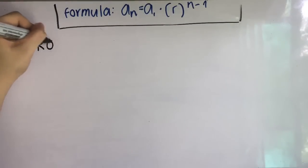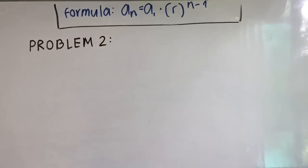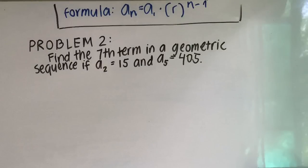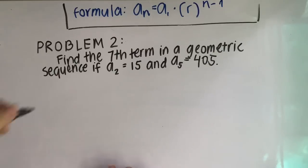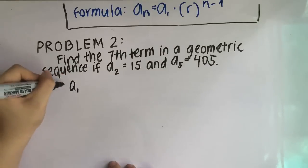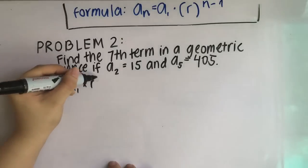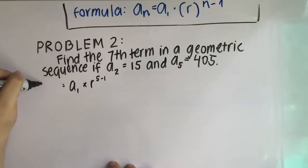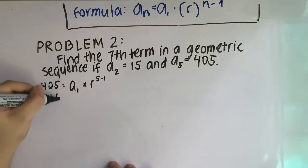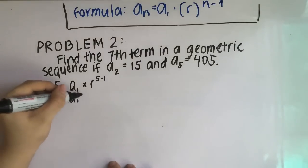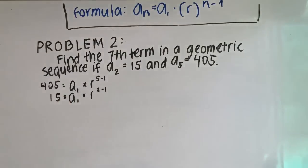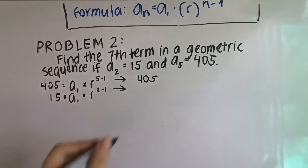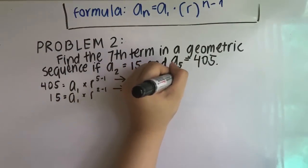On to our 2nd problem: Find the 7th term in a geometric sequence if a sub 2 is equal to 15 and a sub 5 is equal to 405. As you can see, our 2nd problem does not identify the common ratio — that is the first thing we need to solve for. We are going to line up the equations: 405 is equal to a sub 1 multiplied by r raised to 5 minus 1, and 15 is equal to a sub 1 multiplied by r raised to 2 minus 1. Once we evaluate, we get 405 equals a sub 1 times r raised to 4.